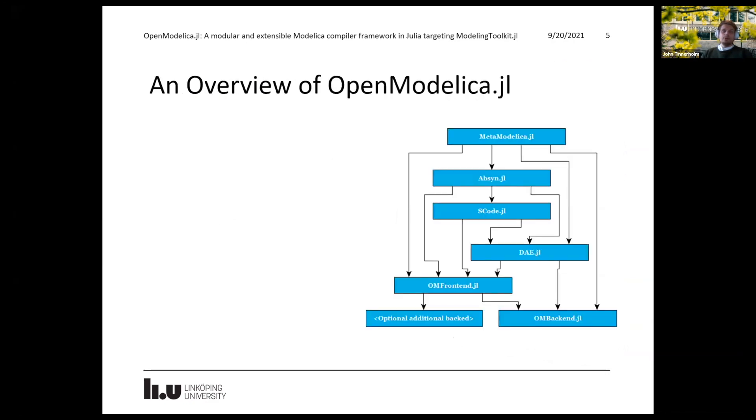To give a brief overview of OpenModelica.jl, it's a Julia implementation of the OpenModelica compiler. We have different compiler modules, so we have a lexer and a parser that uses ANTLR. We have a frontend that is OMFrontend.jl. We have a backend that is OMBackend.jl, which is currently able to target both DifferentialEquations.jl and ModelingToolkit. We have a compiler runtime, which is the MetaModelica.jl package, which mimics some of the functionalities of MetaModelica.